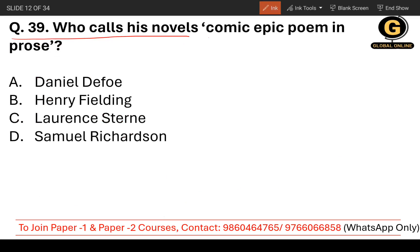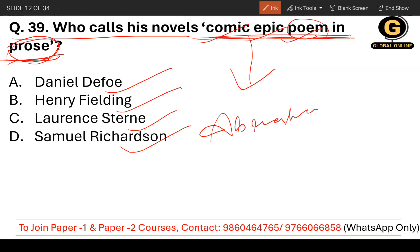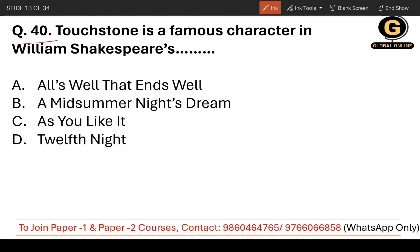Question number 39: Who calls his novels a 'comic epic poem in prose'? This is somewhat contradictory. The options are Daniel Defoe, Henry Fielding, Laurence Sterne, and Samuel Richardson. This phrase has been used for the work Joseph Andrews, which was written by Henry Fielding. So the correct answer is Henry Fielding.